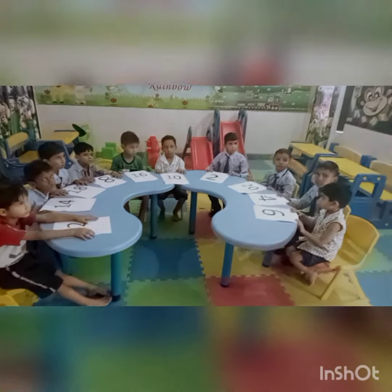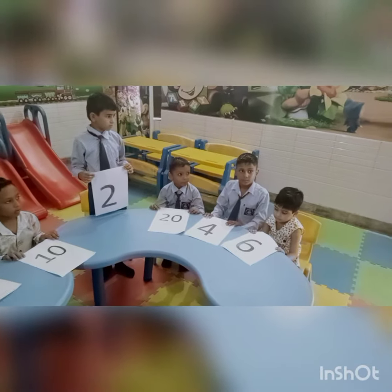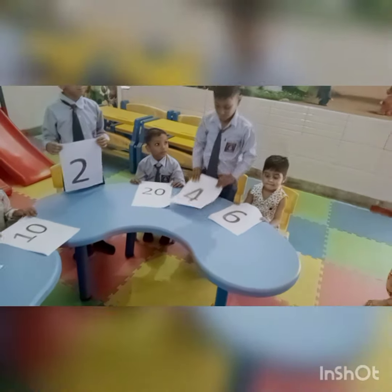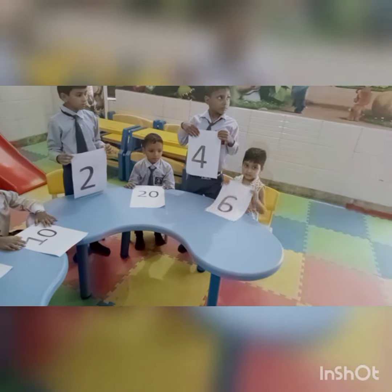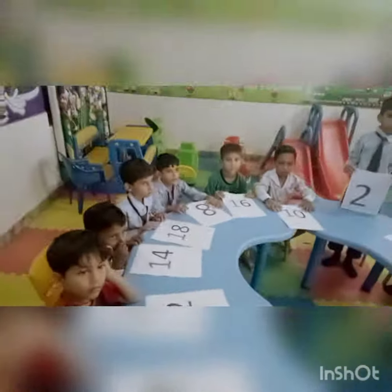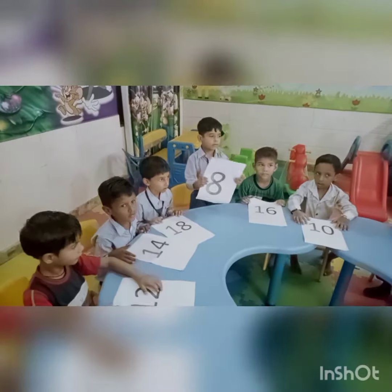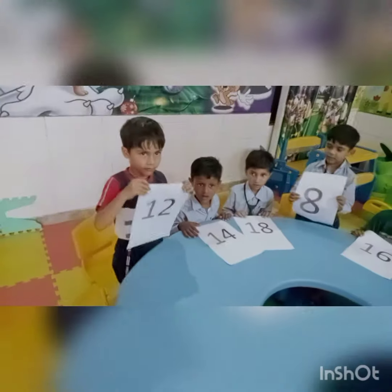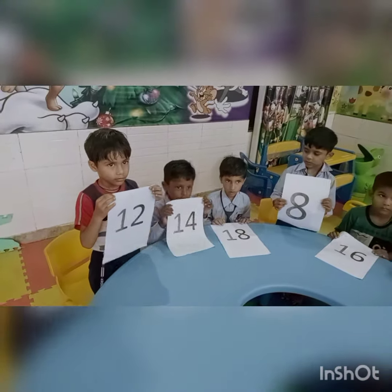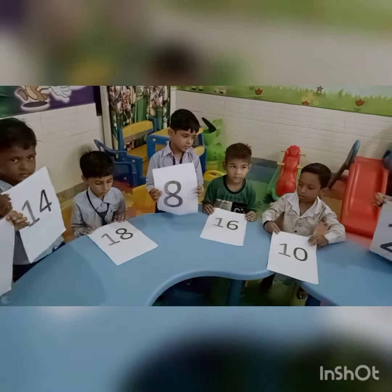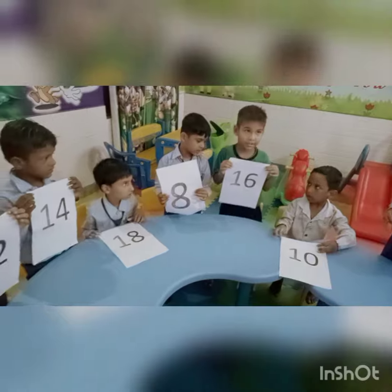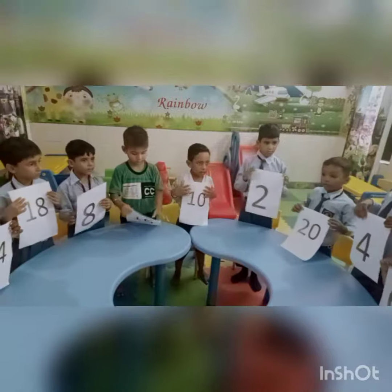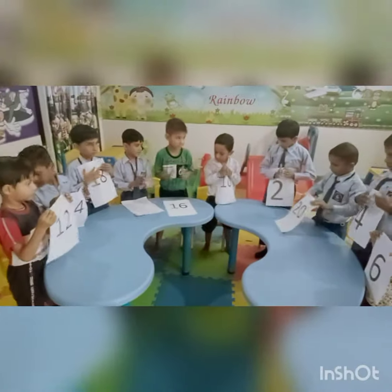Two ones are? Four. Two twos are? Four. Two threes are? Six. Two fours are? Eight. Two fives are? Ten. Two sixes are? Five. Two sevens are? Forty. Two eights are? Two eights are? Sixty. Two nines are? Eight. Two tens are? Five. Two clapping. Two clapping.